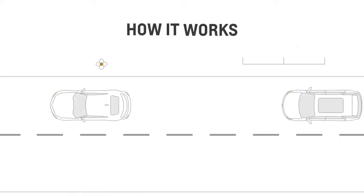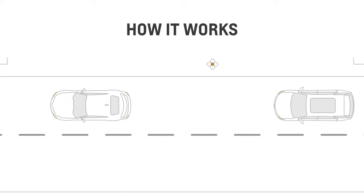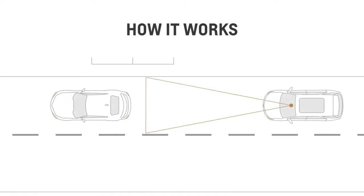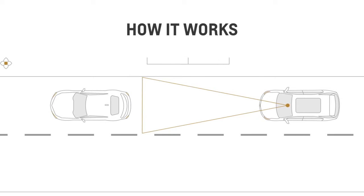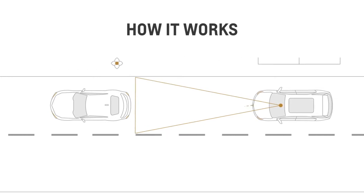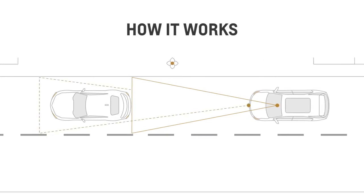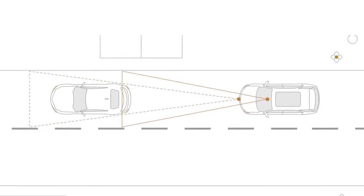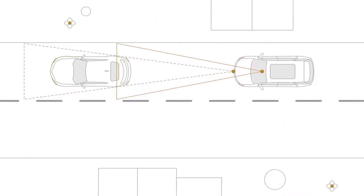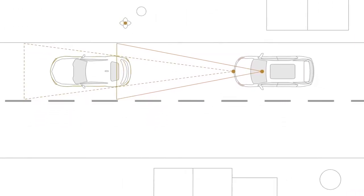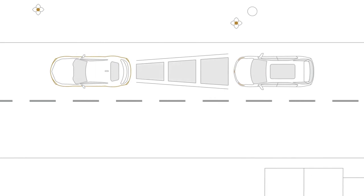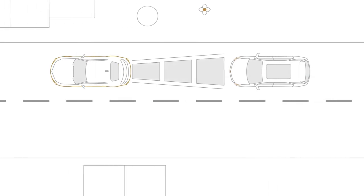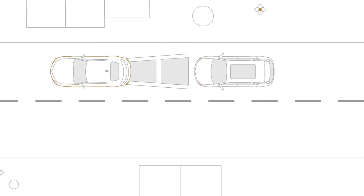In some vehicles, Adaptive Cruise Control uses a forward-looking camera to monitor traffic ahead, while in other vehicles, this feature uses both the available radar, if equipped, and the forward-looking camera. When engaged and it detects a vehicle ahead of you, it can automatically maintain the following gap you select: far, medium, or near.